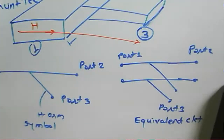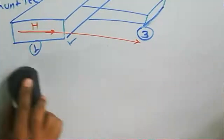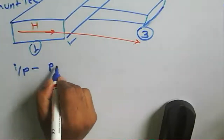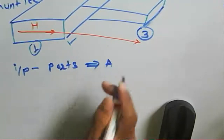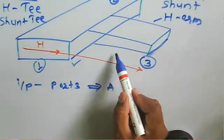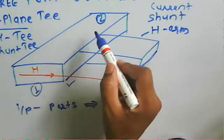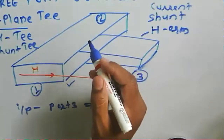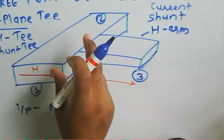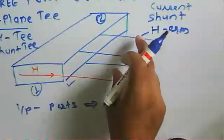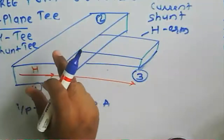The H-plane T can act as a power divider. If we provide input to port 3, the output is available at port 1 and port 2, and those outputs will be equal in amplitude and same in phase. Whatever input amplitude A is given at port 3, the output at port 1 and port 2 will be A divided by root 2, provided the arm lengths are the same.